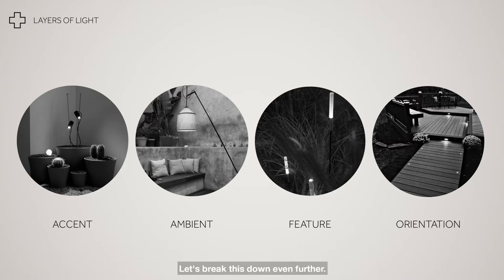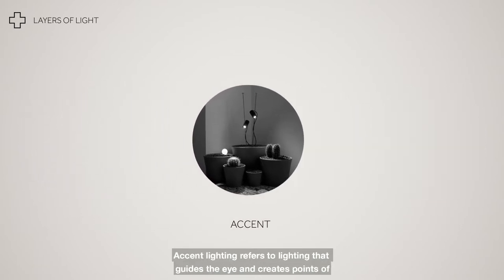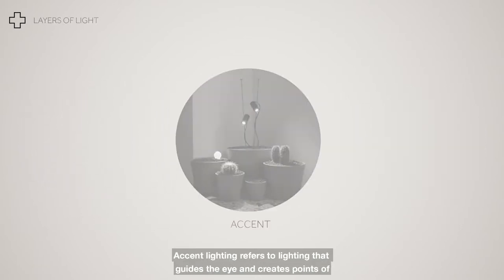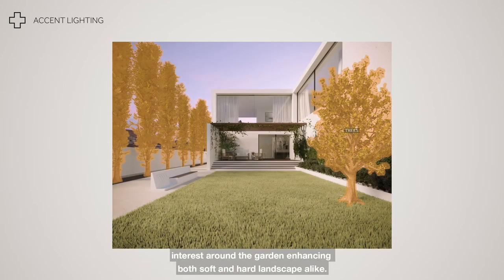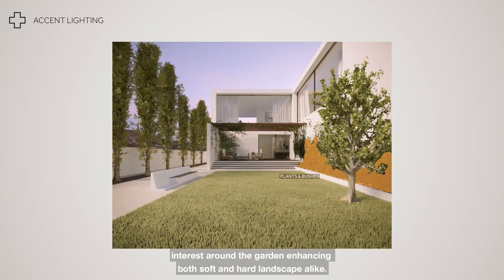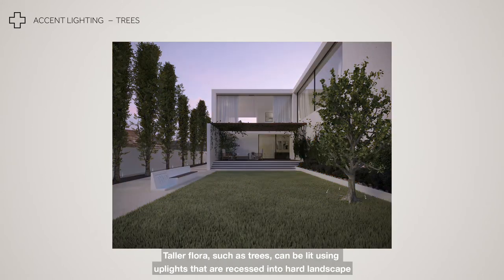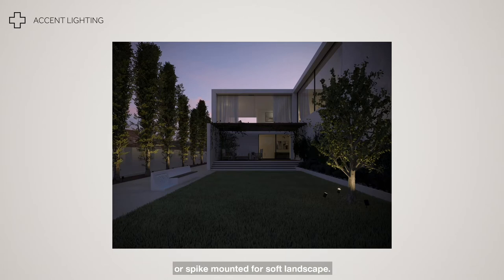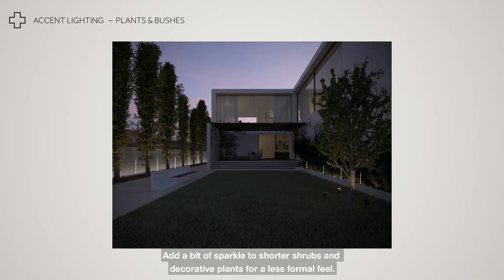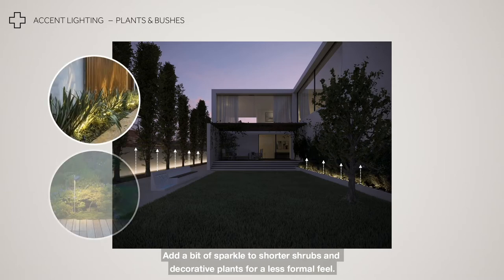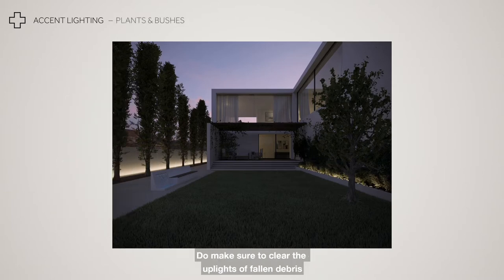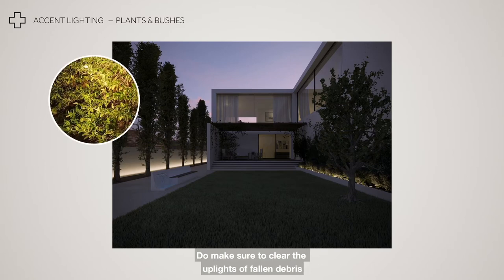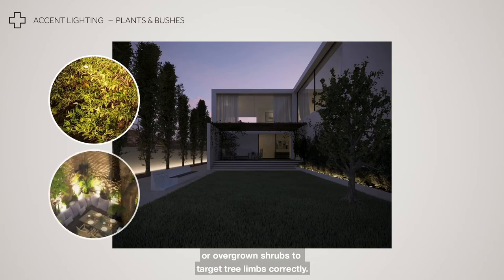Let's break this down even further. Accent lighting refers to lighting that guides the eye and creates points of interest around the garden, enhancing both soft and hard landscape alike. Taller flora such as trees can be lit using up lights that are recessed into hard landscape or spike mounted for soft landscape. Add a bit of sparkle to shorter shrubs and decorative plants for a less formal feel. Do make sure to clear the up lights of fallen debris or overgrown shrubs to target tree limbs correctly.